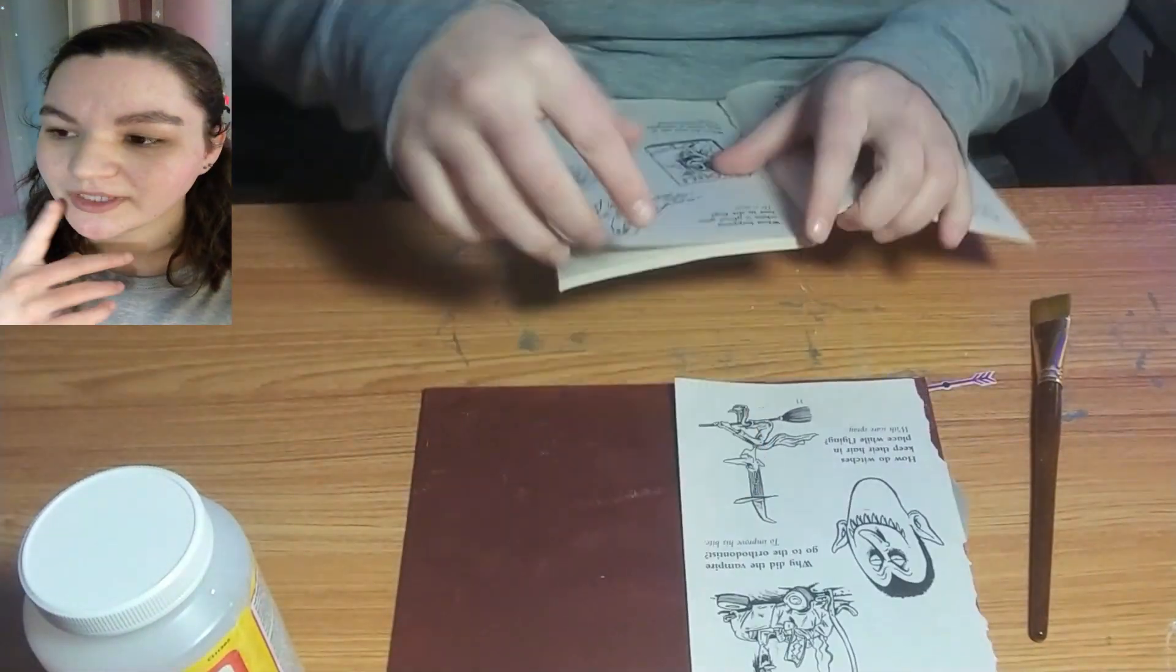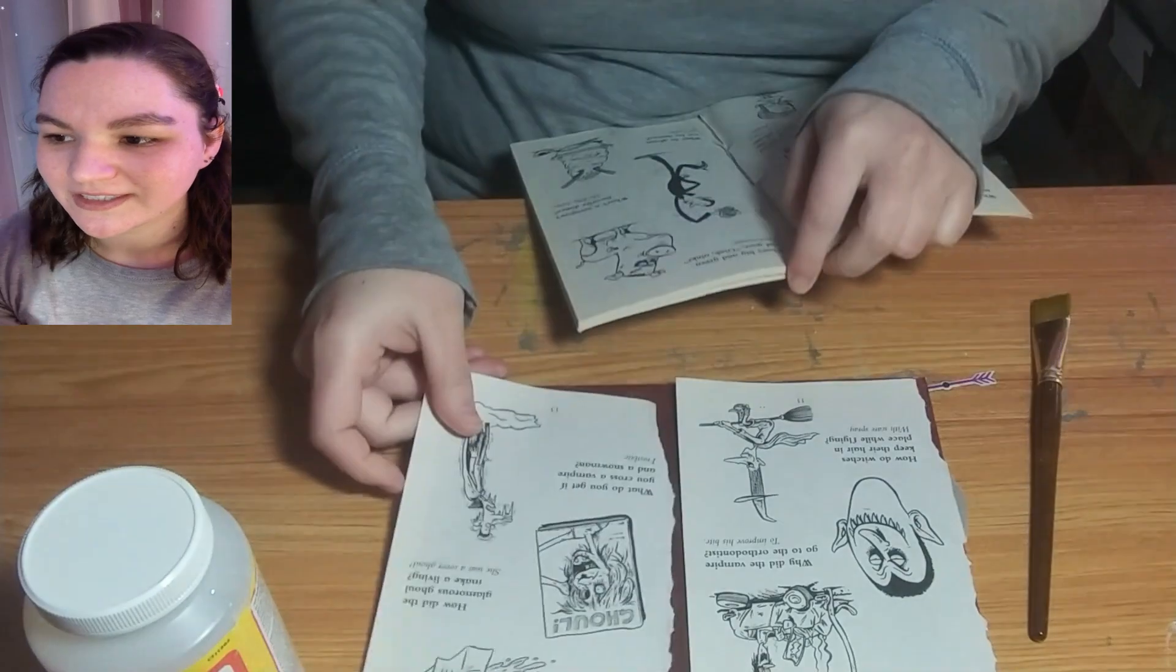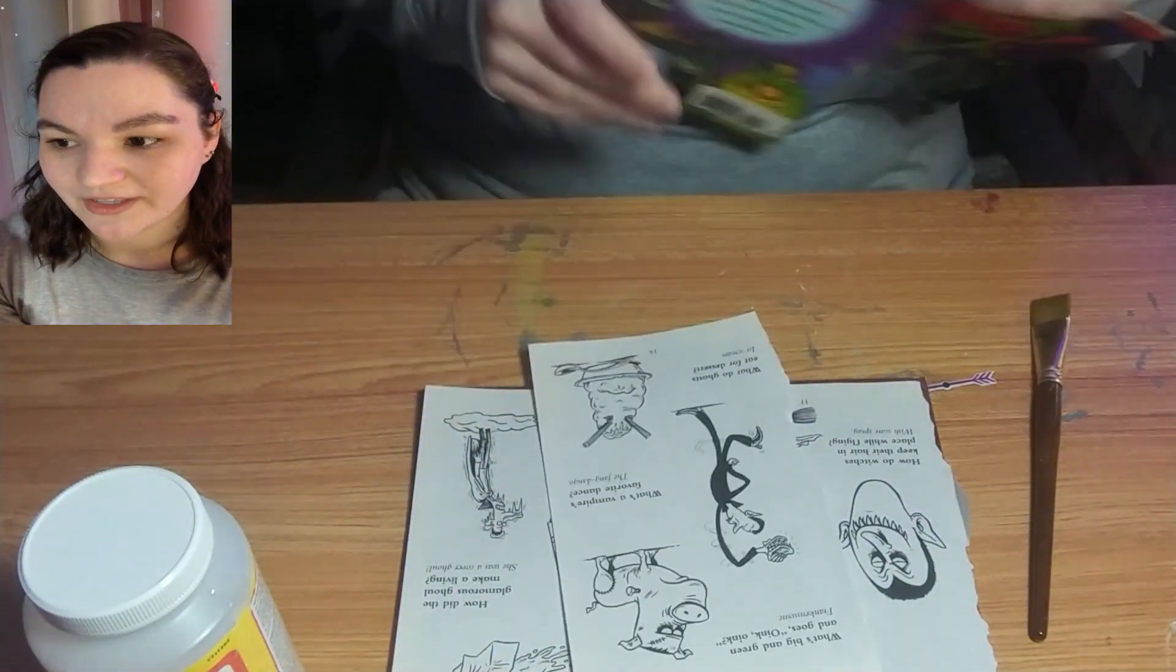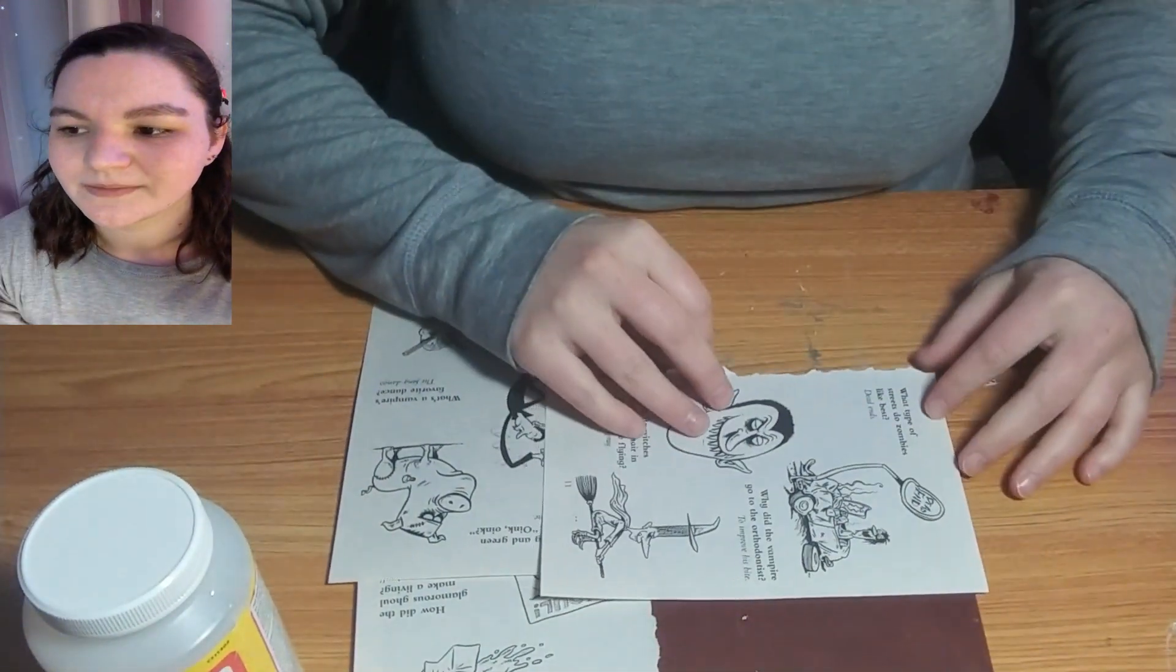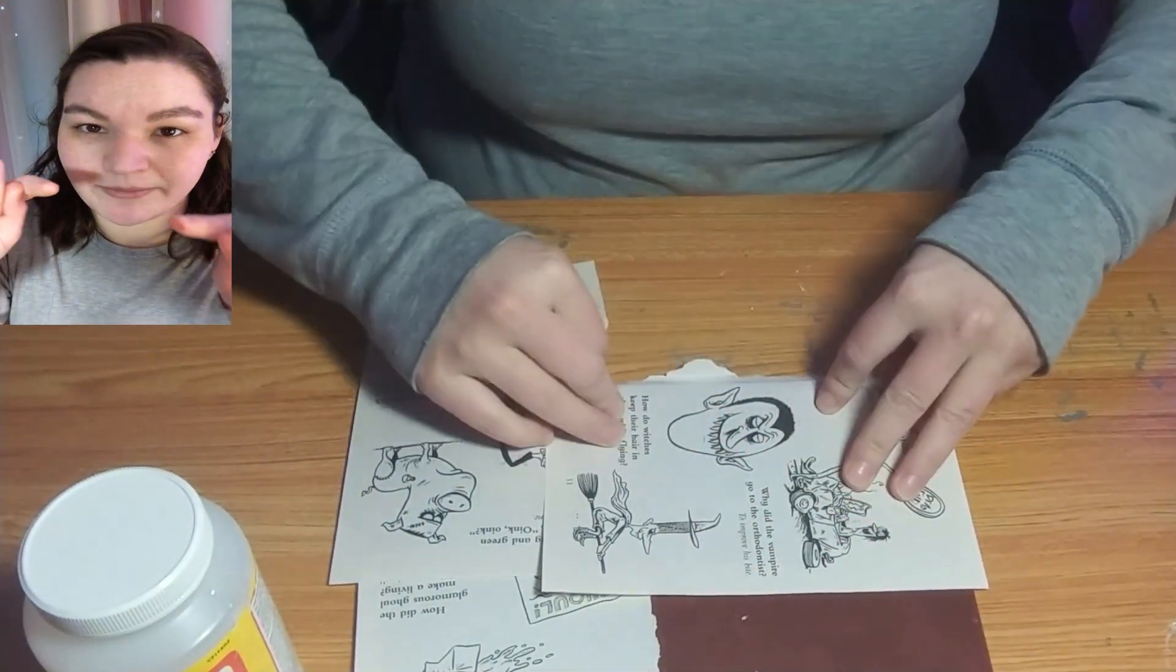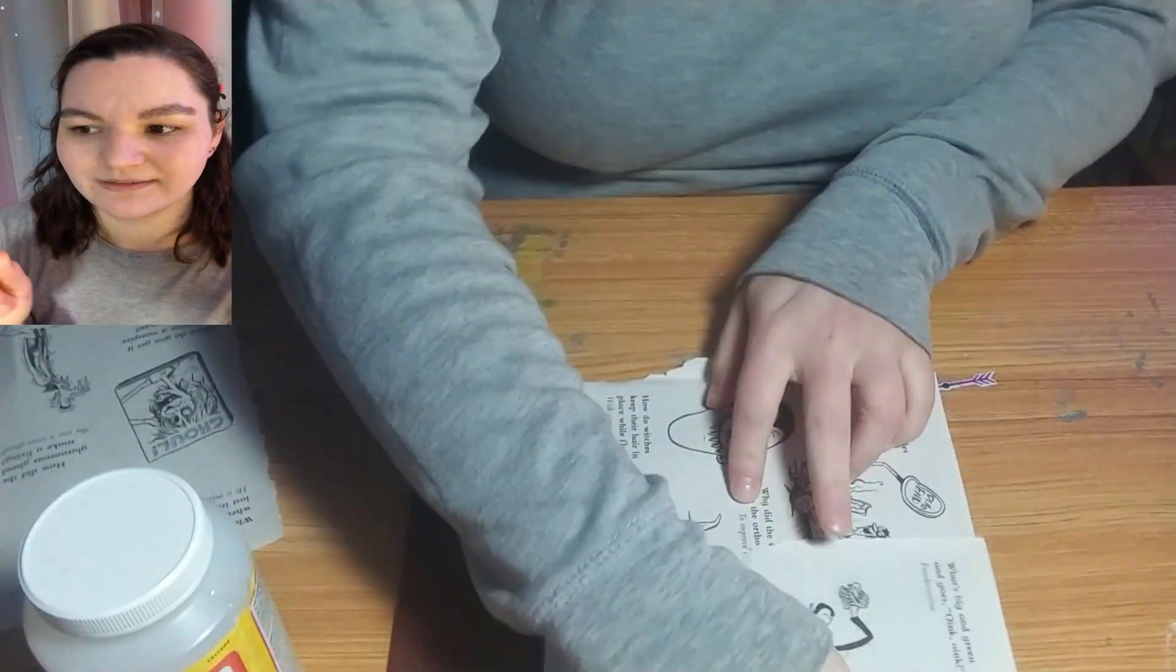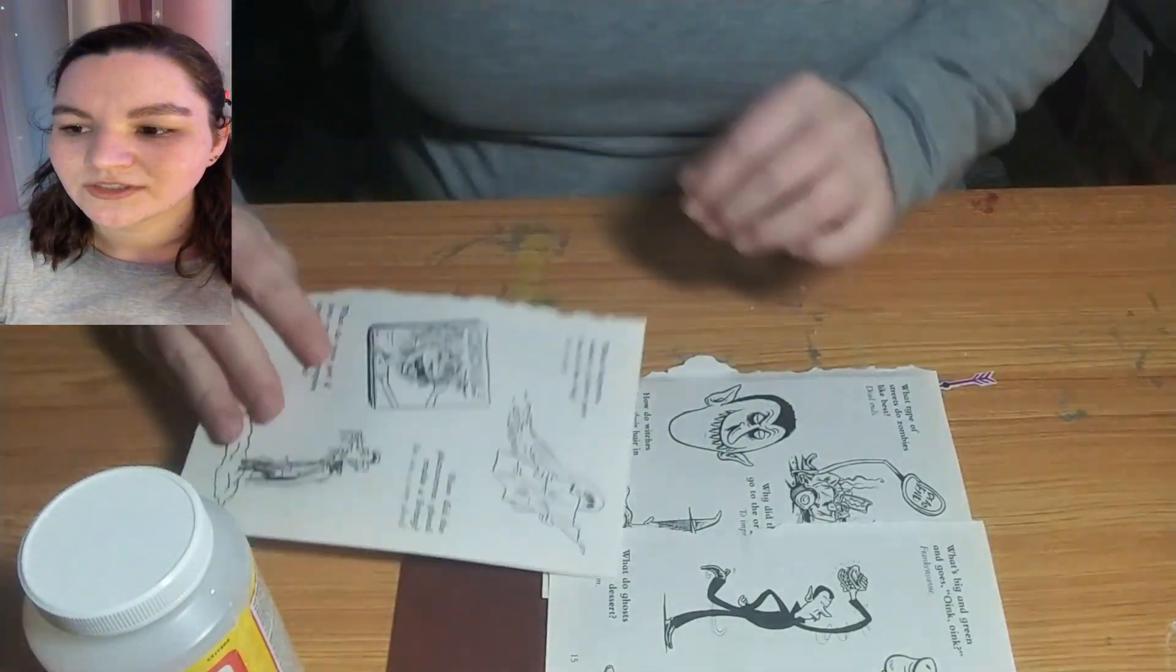I chose an old joke book because it's something I'm not actually going to want to read. Tear out as many pages as you need to cover your thing, then you mod podge the bottom, stick them down. I like to give a little lip that'll go around so I can glue it to the back so it's covered all the way around the edges.